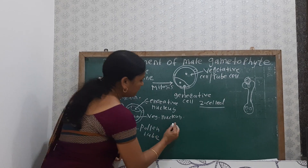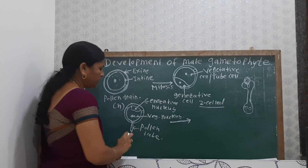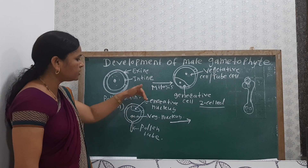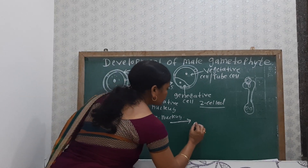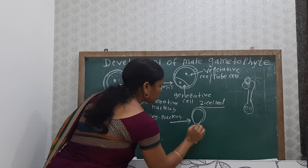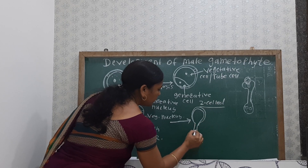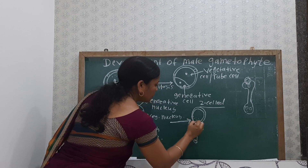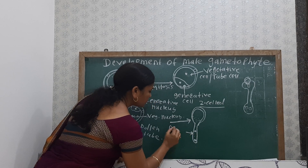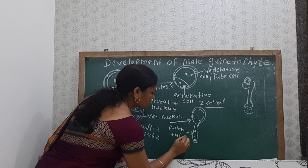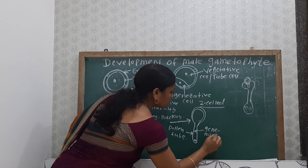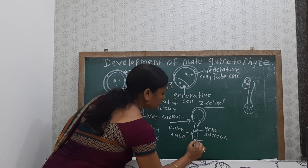In the pollen tube, the vegetative nucleus — also known as the tube nucleus — migrates into the pollen tube. Then the generative nucleus also migrates into the pollen tube. Here we have the pollen tube, with the tube nucleus and the generative nucleus, and the cytoplasm also enters into the pollen tube.